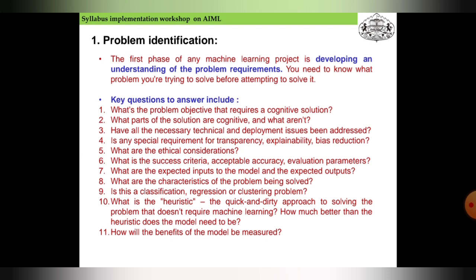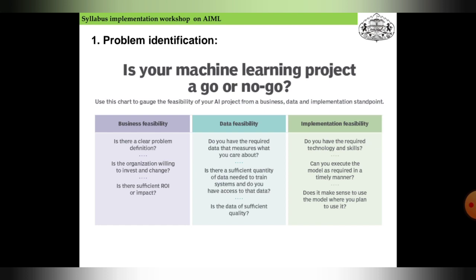What is the success criteria, acceptable accuracy, and evaluation parameters? What are the expected inputs to the models and expected outputs? What are the characteristics of the problem being solved - is this classification, regression, or clustering? What is the heuristic, the quick and dirty approach to solving the problem that doesn't require machine learning? How much better than the heuristic does the model need to be? How will the benefit of the model be measured?